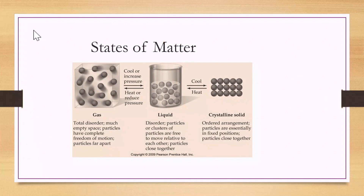Let's sum up states of matter with this slide, starting with gases. The particles are in total disorder. There is a lot of empty space between particles. Particles have complete freedom of motion and are far apart. Gases go from gases to liquids by cooling and/or an increase in pressure. Looking at liquids, there is still some disorder. Particles or clusters of particles are free to move or slide past each other. Liquids go to a solid state by cooling, and go to a gaseous state by adding heat and/or reducing pressure.